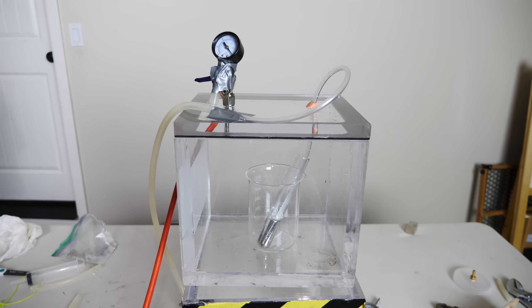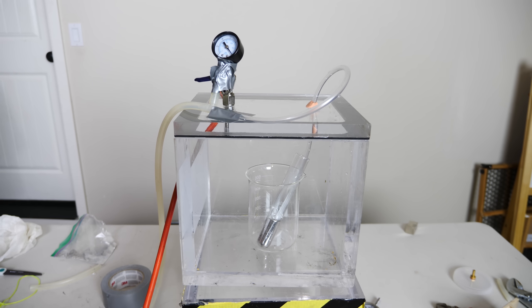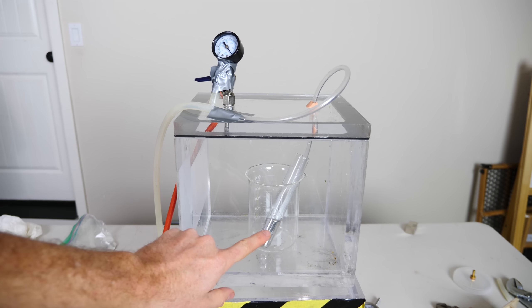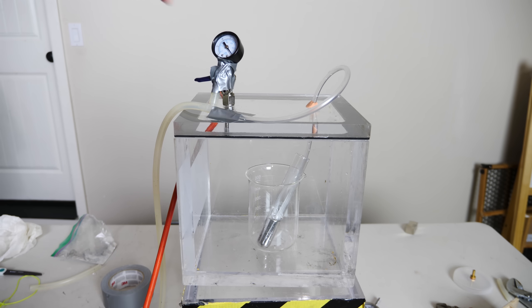But what if you use something that has a really low vapor pressure like a liquid metal. So let's try this same experiment again but use gallium instead and see if we can actually suck anything up into the syringe under vacuum. Okay. Three, two, one.